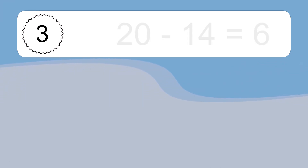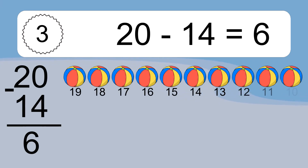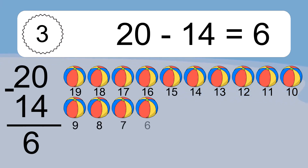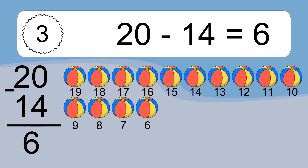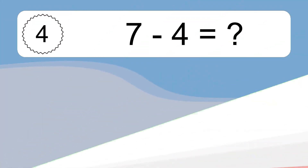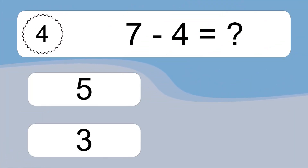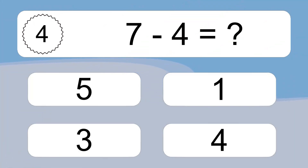20 minus 14 equals 6. Let's count it. 19, 18, 17, 16, 15, 14, 13, 12, 11, 10, 9, 8, 7, 6. 7 minus 4 equals what?